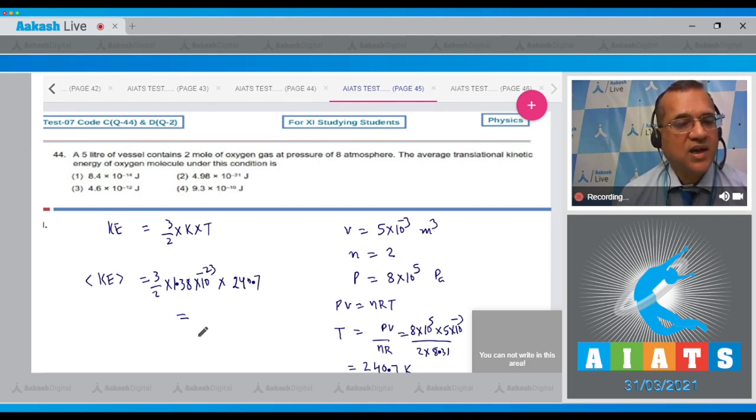When you solve, you get the answer 4.98×10⁻²¹ joules. Look at the options—the second is 4.98×10⁻²¹ joules. So answer to this question is 2.